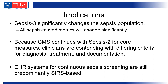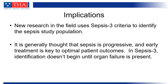Because CMS continues to use sepsis 2 for core measures, clinicians are contending with differing criteria for diagnosis, treatment, and documentation, which is a very frustrating position to be in. Many electronic health record systems that provide continuous background screening for sepsis are still predominantly SIRS-based. New research is using sepsis 3 criteria to identify the sepsis population, and there is concern that by excluding the pre-organ failure population, knowledge that could improve our understanding of sepsis will be lost. Since sepsis is generally thought to be progressive and early treatment is key, identification in sepsis 3 not beginning until organ failure is present could contribute to delayed treatment and poorer outcomes.